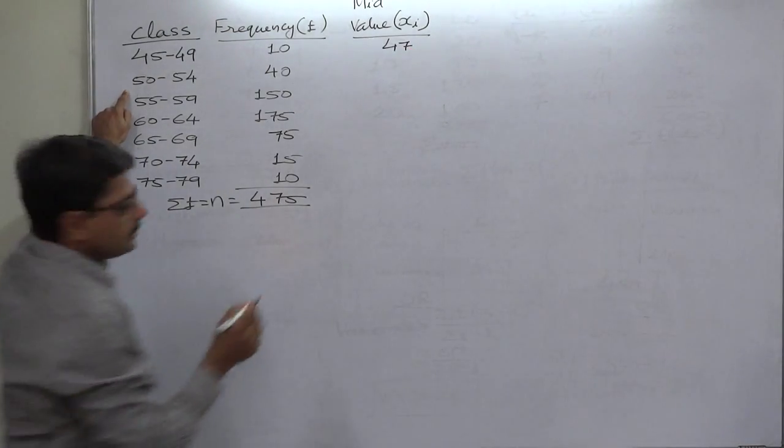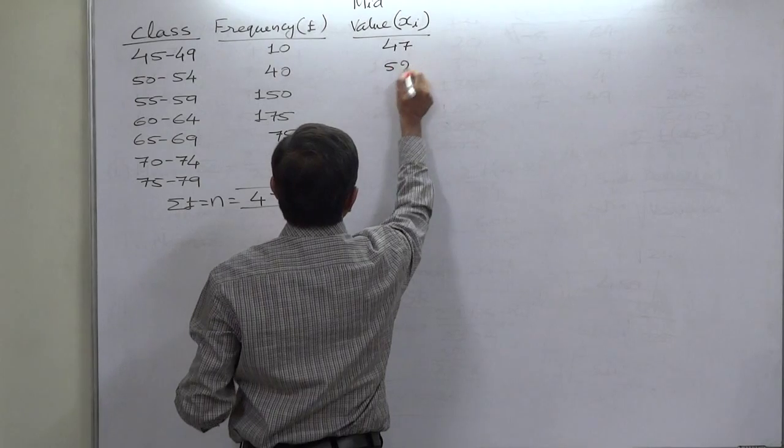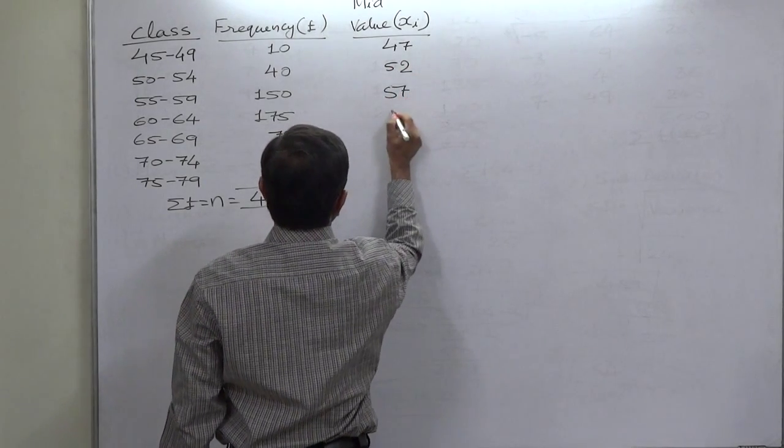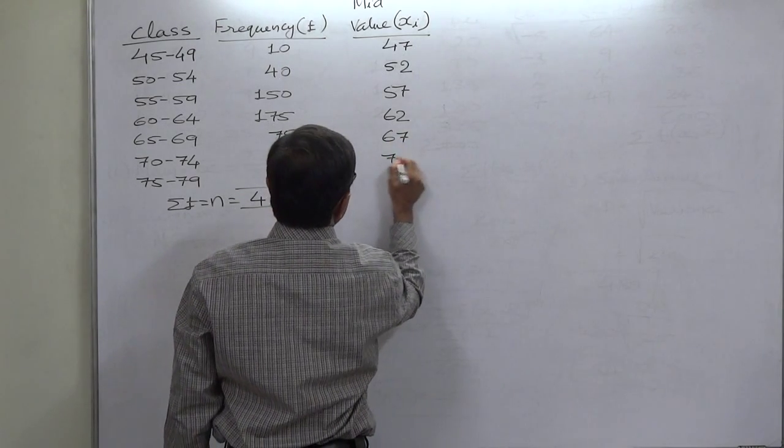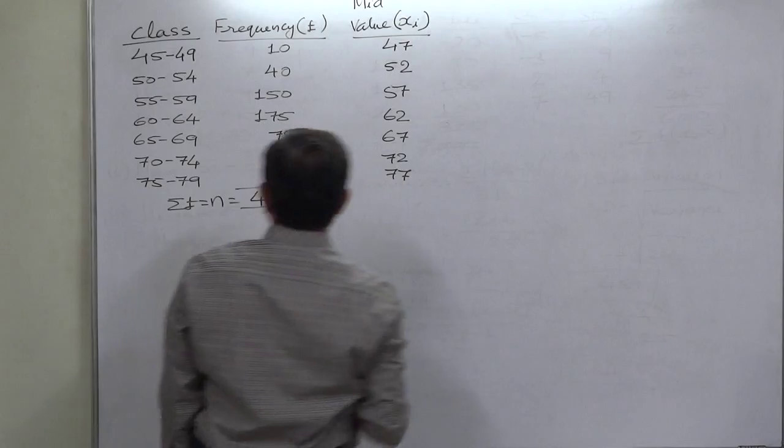50 to 54 it should be 52, then 57, 62, 67, 72, and 77.